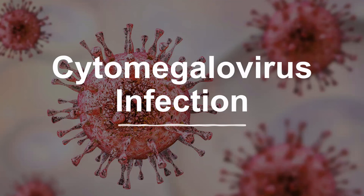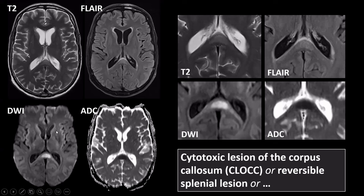Cytomegalovirus is rarely the cause of central nervous system infections in adults, and when it does, it will do so in patients with severe immune suppression. On these images we see T2, FLAIR, diffusion-weighted images, and the ADC map. We see a faint signal increase centrally in the splenium of the corpus callosum — a bit hazy on T2 and FLAIR, but clearly visible on diffusion-weighted images and the ADC map as diffusion restriction. This entity has many names: transient splenial lesions, reversible splenial lesions, or cytotoxic lesions of the corpus callosum.